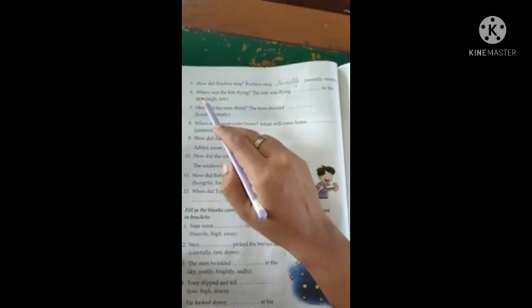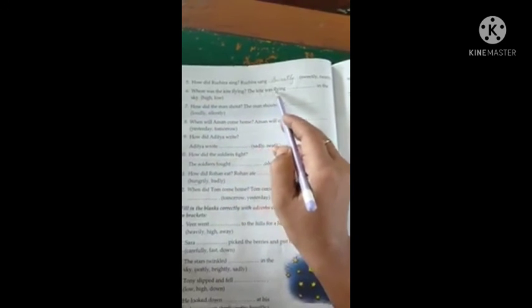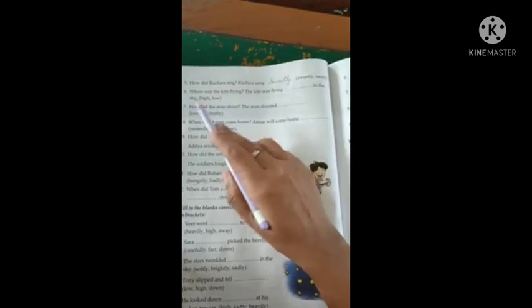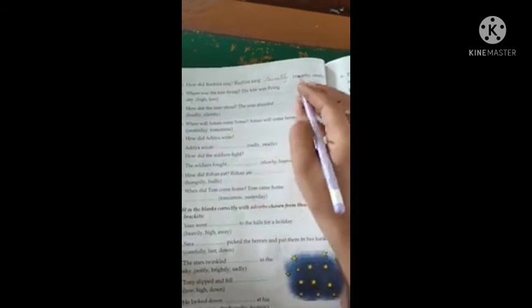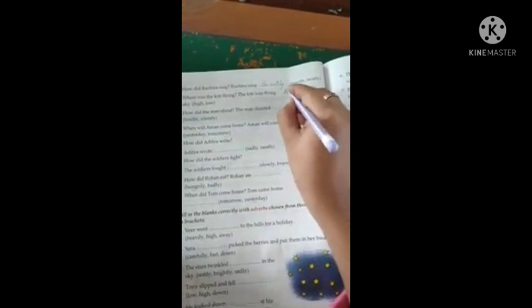Sixth question: Where was the kite flying? The kite was flying dash in the sky. The kite was flying high in the sky. Dear students, do these activities in your book and send it for correction. Thank you.